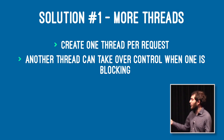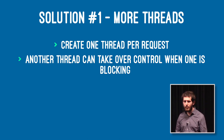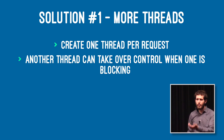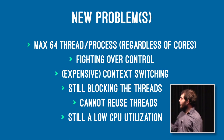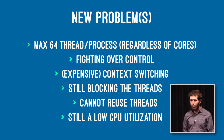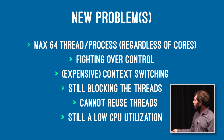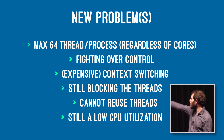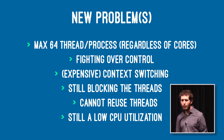One way to solve it is more threads. You have one thread that can run a request at a time, and when it's blocking it will use that thread. Why not spawn more threads using a dispatch queue? They will take over control when one thread is busy waiting for the external source — the database, the API. But there are 64 threads per application, not per core. You can spawn more threads and handle 64 requests at a time, but it's expensive. You're fighting over control, doing context switching, and you still have low CPU utilization.